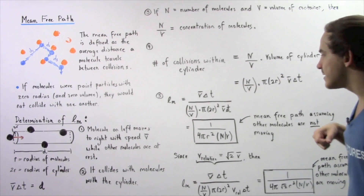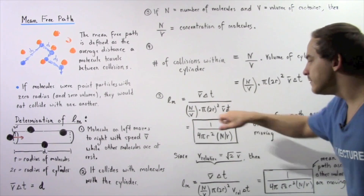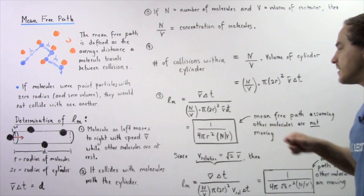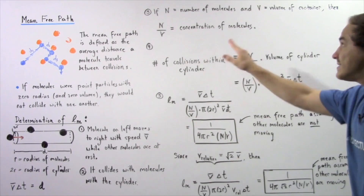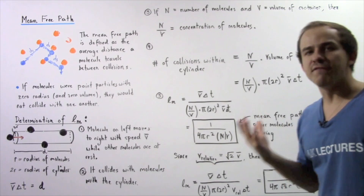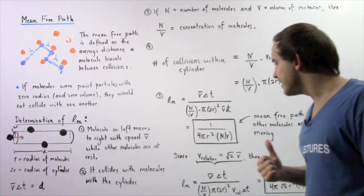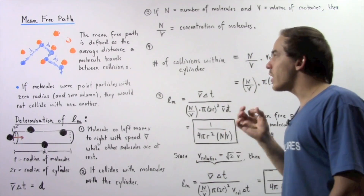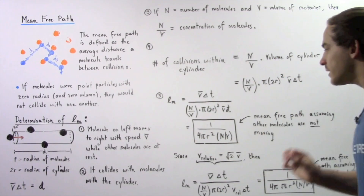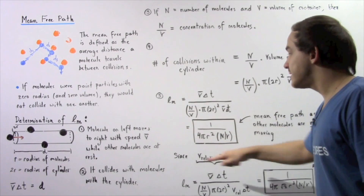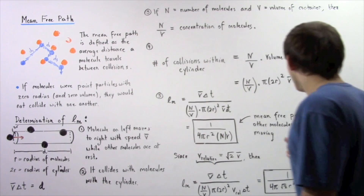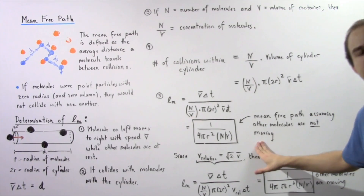The V-bar and delta-T terms cancel, and we are left with 1 divided by 4·pi·R² multiplied by N divided by V. Here N is the total number of molecules in the container, V is the volume of the container, R is the radius of each molecule, and pi is a constant. This equation gives us the mean free path assuming the other molecules are not moving.